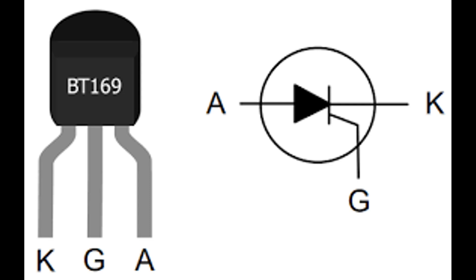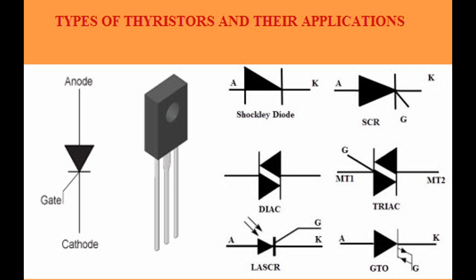Light and heat control — light dimmers: thyristors in light dimmer circuits control the brightness of lamps by adjusting the power delivered to the bulb. Heating elements: in industrial heating applications, thyristors regulate the power supply to heating elements, allowing for precise temperature control. Overvoltage protection — surge protectors: thyristors are used in surge protection devices to protect sensitive electronic equipment from voltage spikes; when a surge occurs, the thyristor conducts, diverting excess voltage away from the protected circuit.